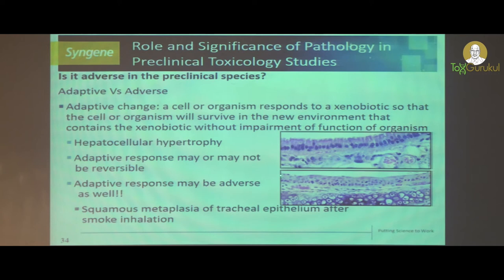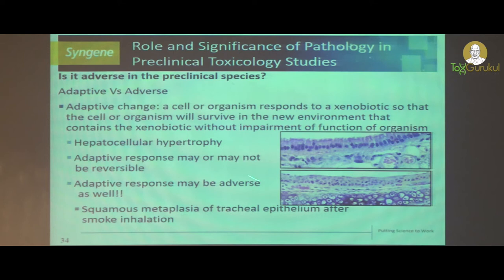For example, the tracheal epithelium exposed to smoke: over a period of time, the pseudostratified columnar cell layer is replaced with a squamous layer so the cell can survive in the environment. But the mucosal barrier is lost, meaning particles in the air as well as infectious particles cannot be removed. As a result, the animals are more susceptible to infection. So although it's an adaptive change, it is considered an adverse finding.